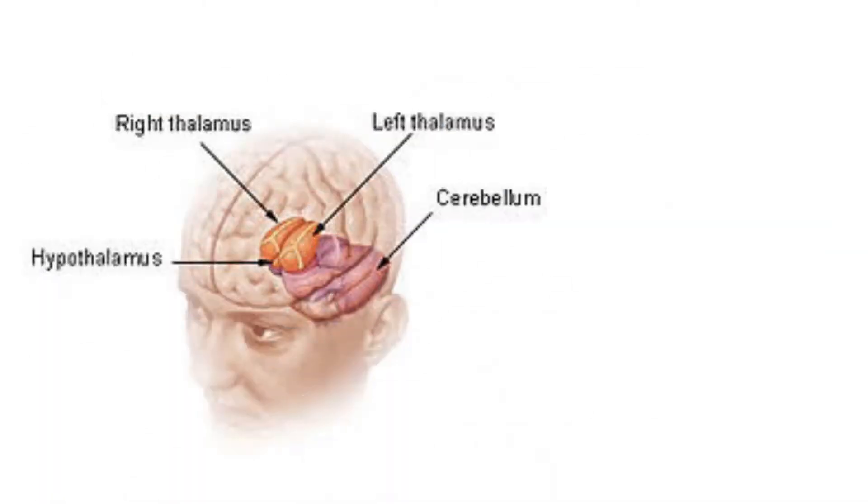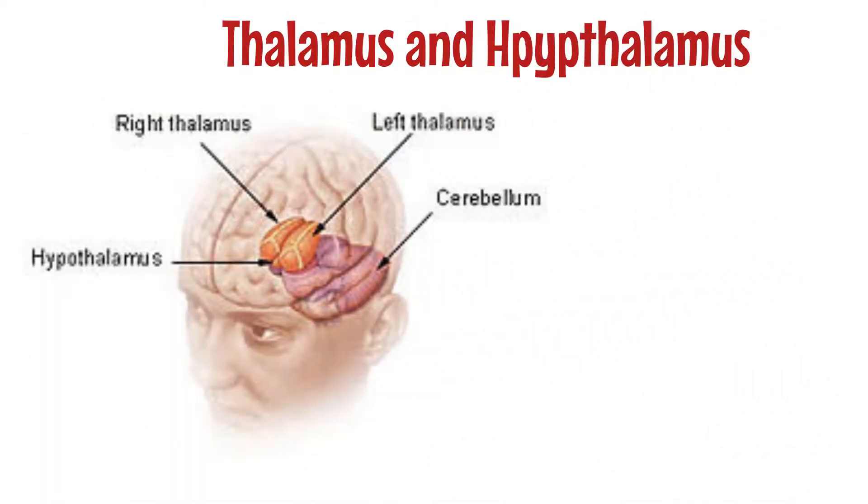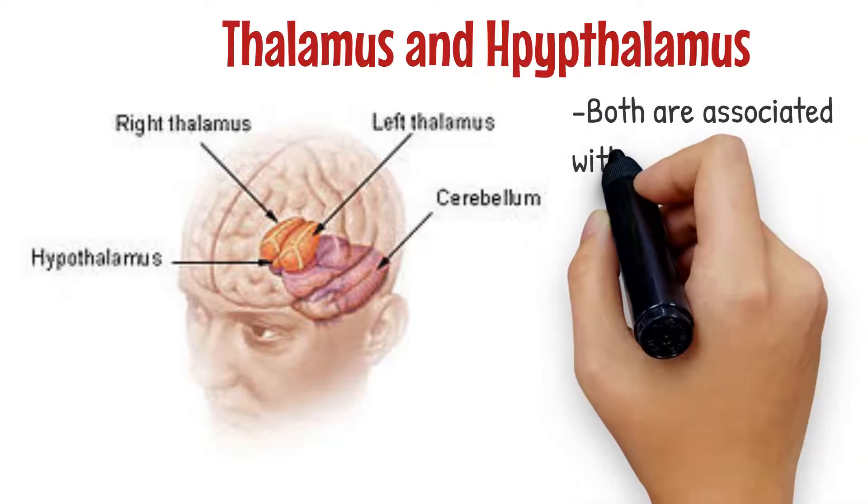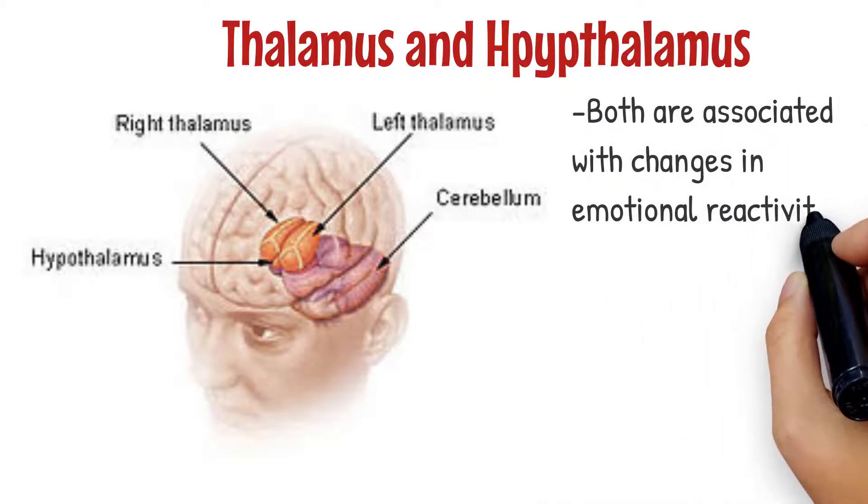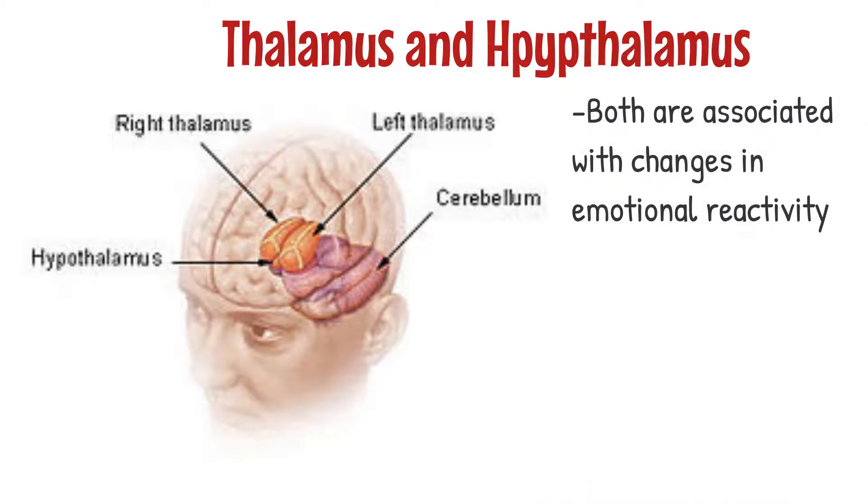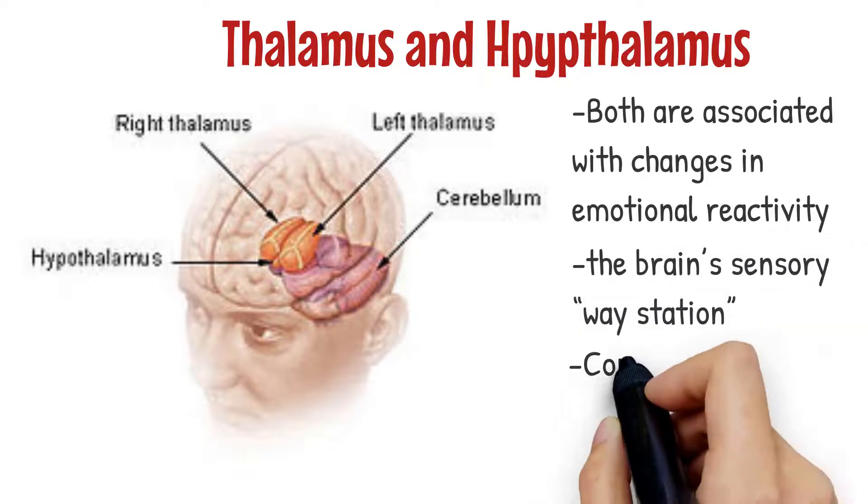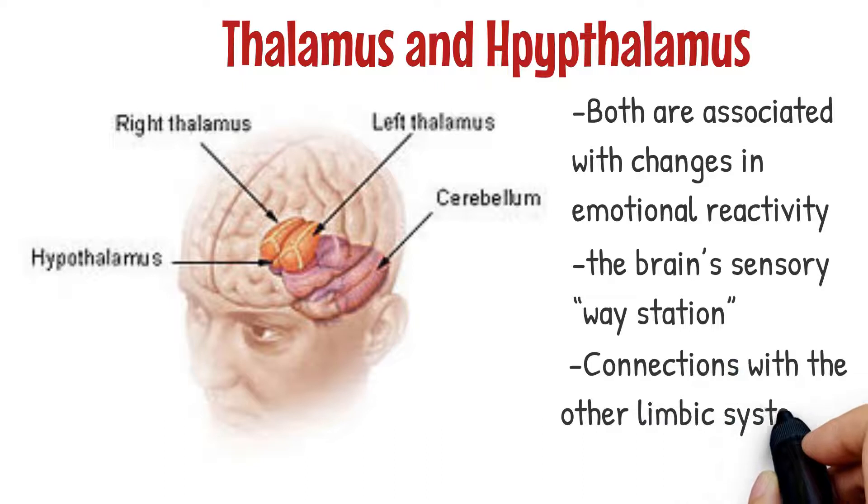Next, we have the thalamus and hypothalamus, both of which are associated with changes in emotional reactivity. The former is the brain's sensory way station and is important due to its connections with the other limbic system structures.